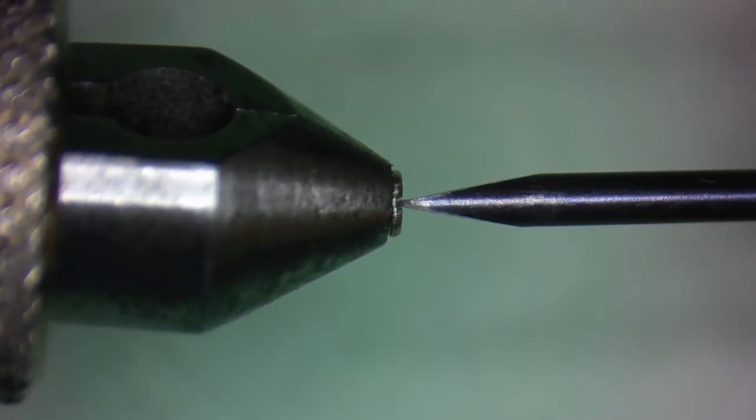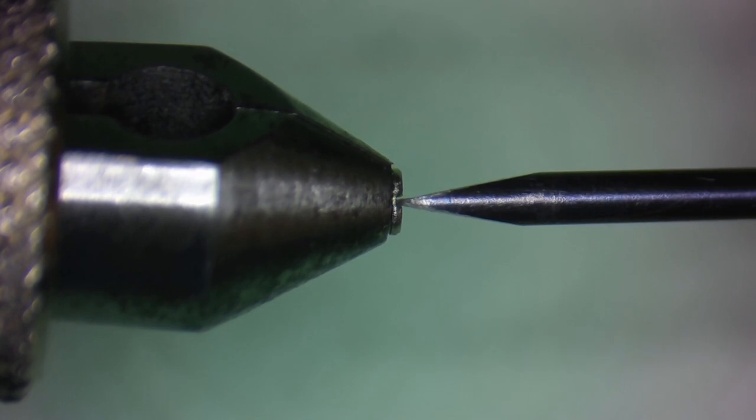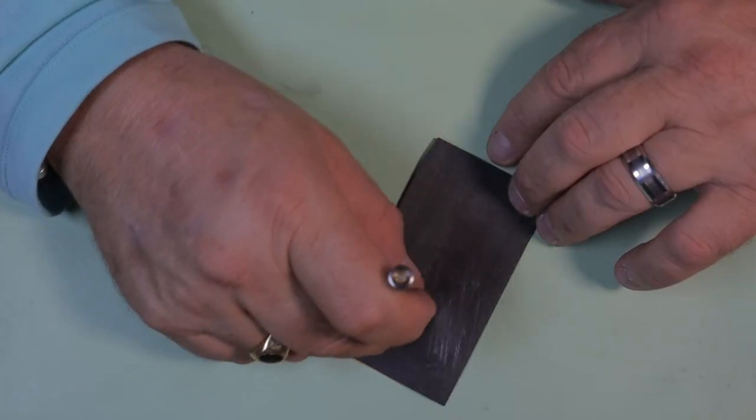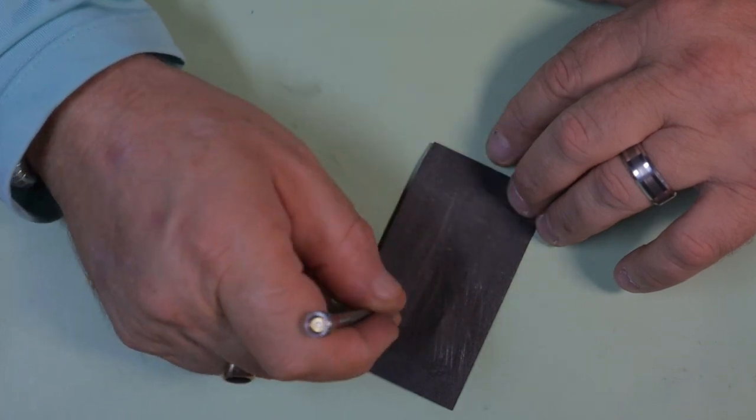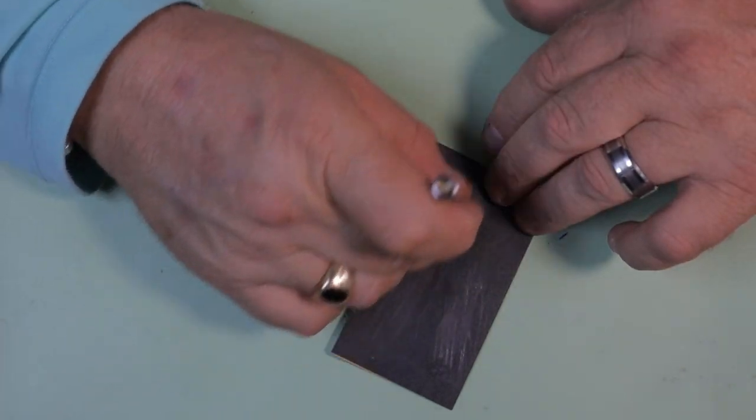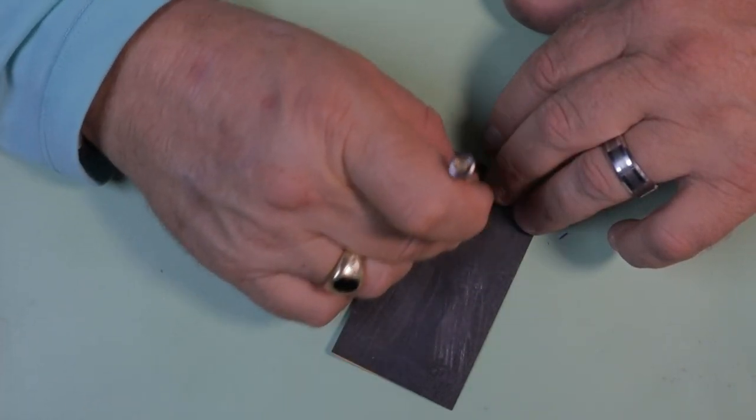So this is a very easy fix and we're going to do that with some 400 grit sandpaper. So holding your screwdriver at a 90 degree angle just make a couple swipes and then check your screw depth again. This is not a long process.